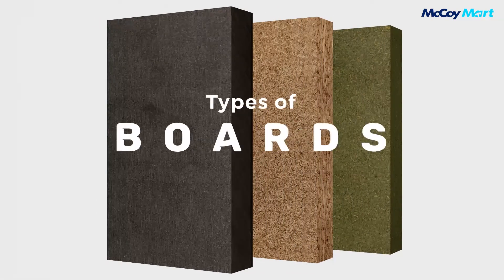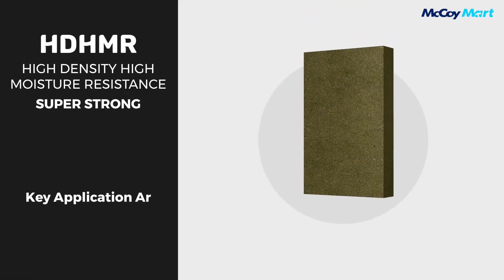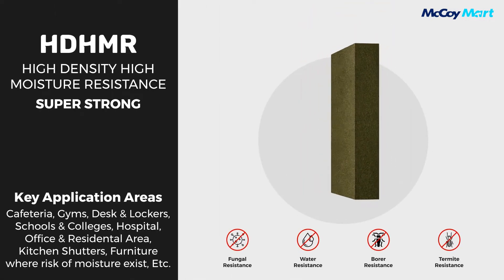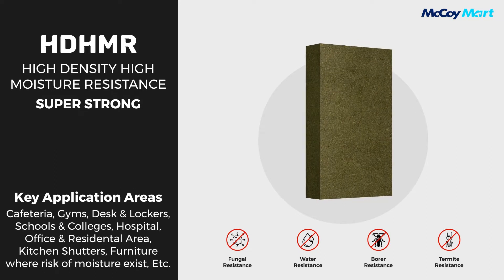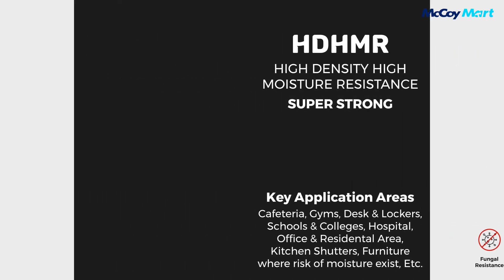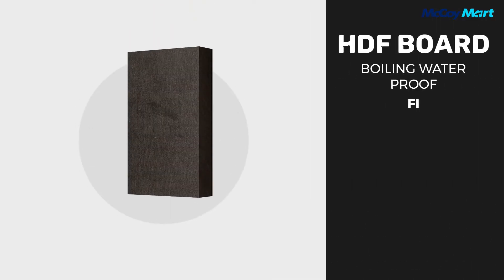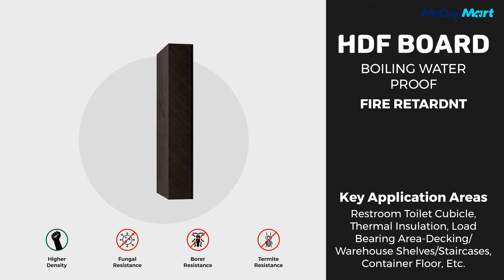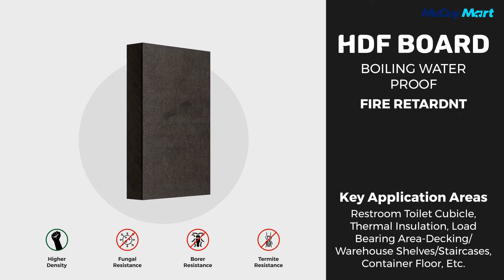Today we will learn about certain important types of boards. Number one: HD MMR boards, which stands for High Density High Moisture Resistance board. These have multiple applications — they can be used in cafeterias, gyms, and any place where there is a risk of moisture. They are fungal resistant, water resistant, borer resistant, and most importantly, termite resistant.